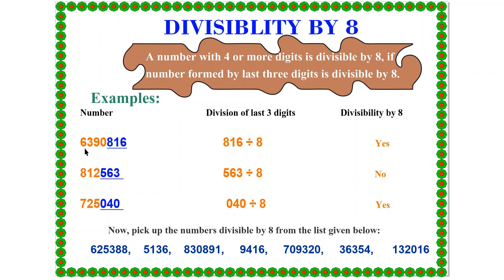Let us do some examples. The first number is 6390816. The last 3 digits are 816, highlighted in blue. We only need to divide 816 by 8. If it is divisible by 8, then the whole number is divisible by 8. We know that 816 is purely divisible by 8, so the whole number 6390816 is divisible by 8.